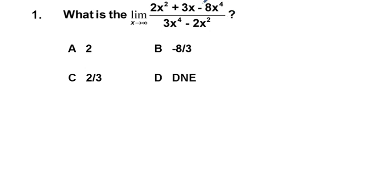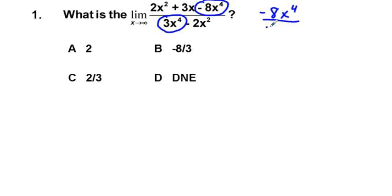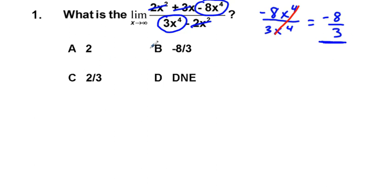Look for the largest powered x term. Up in the numerator we have −8x⁴, and in the denominator 3x⁴. The simplification of these two highest-powered terms gives −8x⁴ over 3x⁴. The x⁴ terms cancel, leaving −8/3. The rationale is that relative to the highest powered terms, the lower powered terms are inconsequential as we approach infinity. Therefore our correct answer is −8/3, which is answer choice B.